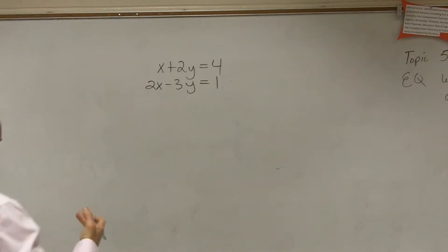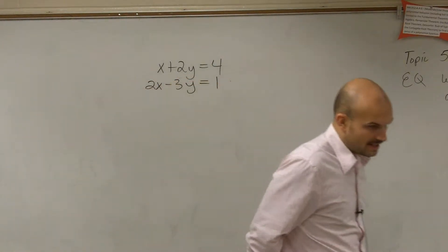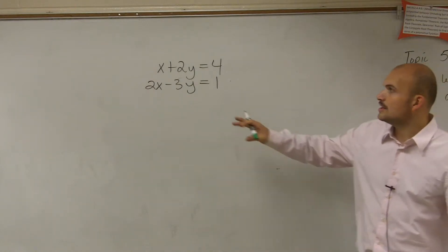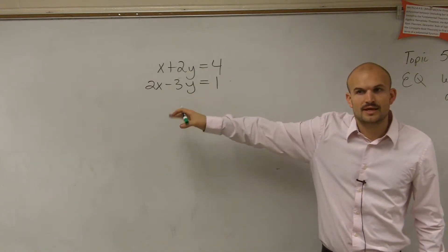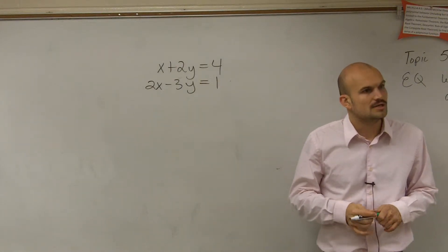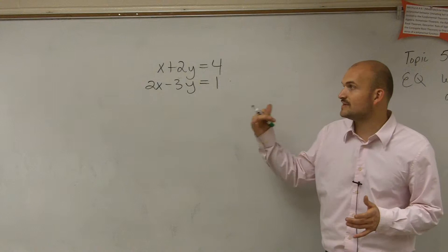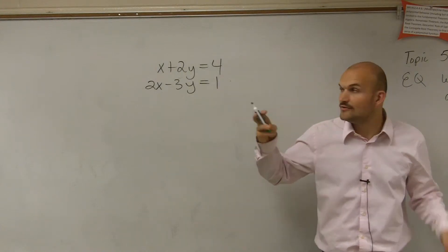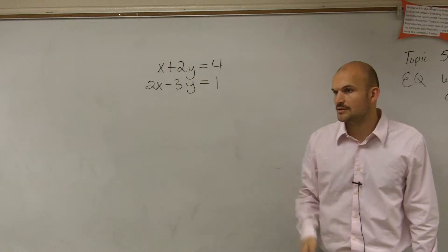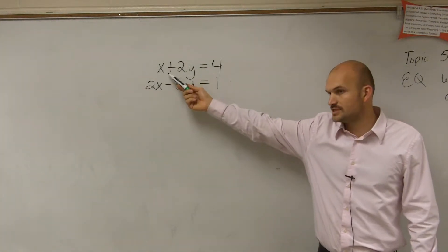So if you guys remember, the first step we do is to find the variable that has a coefficient of 1 or negative 1. So when we look up here, what is the only variable that has a 1 or negative 1 as a coefficient? The x in the first equation, right?